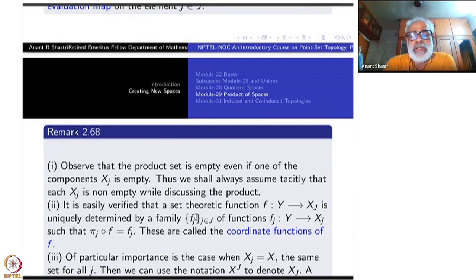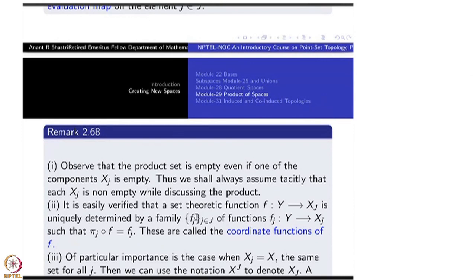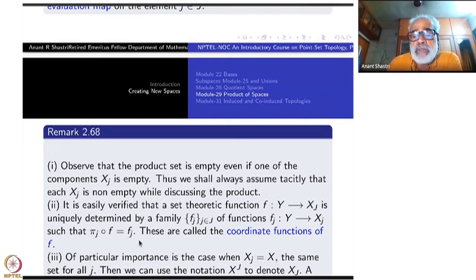It is easily verified that the set theoretic function f from Y to product Xj is uniquely determined by the families fj, j belong to J of functions fj from Y to Xj, such that fj equals pj composite f. These are called the coordinate functions of the product. If you know all these functions, then you know f and conversely.